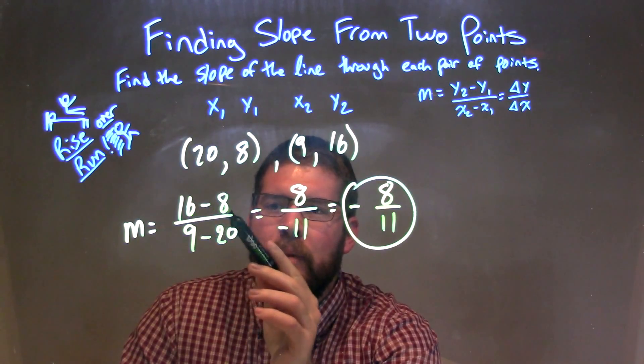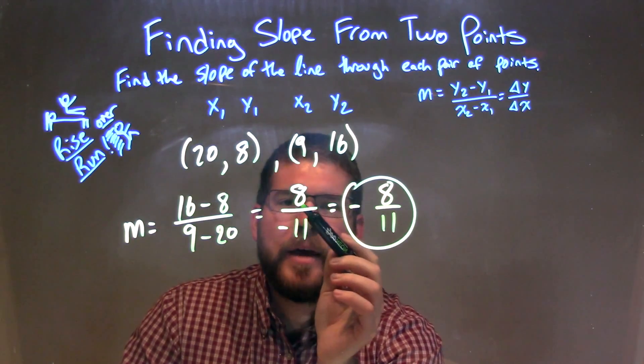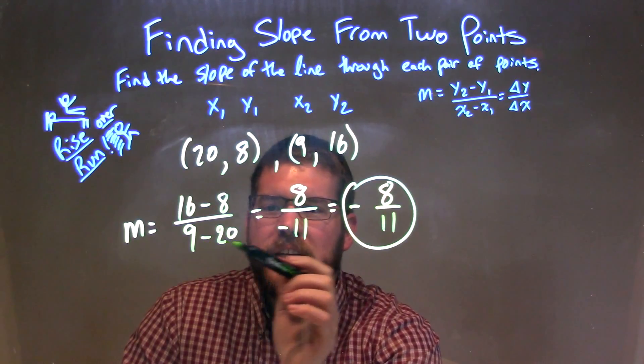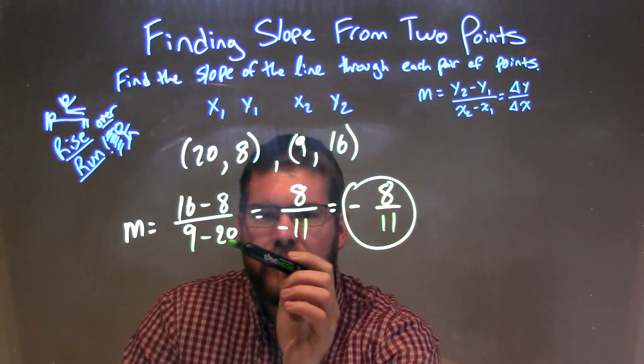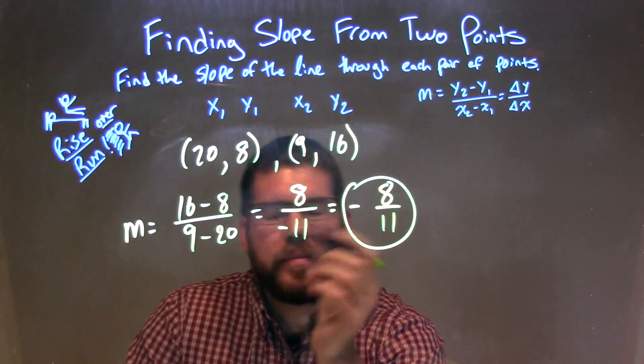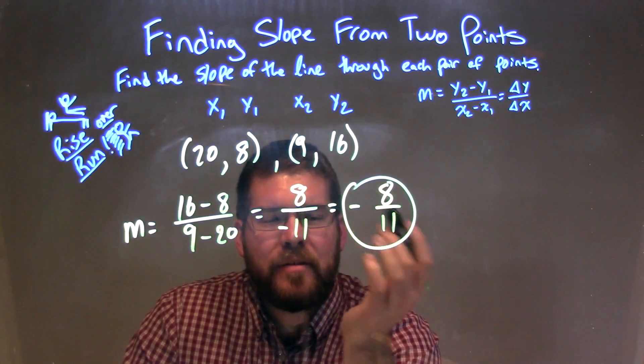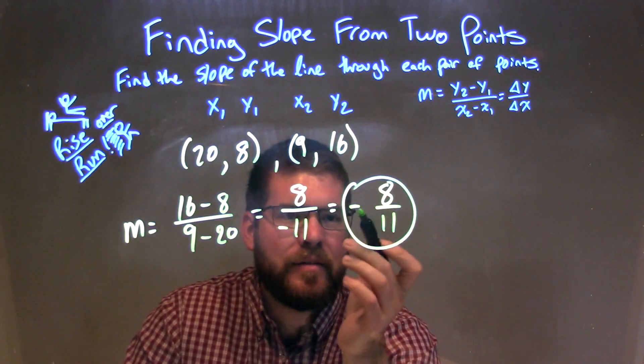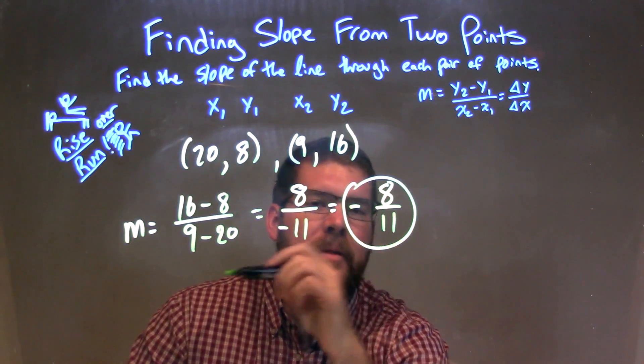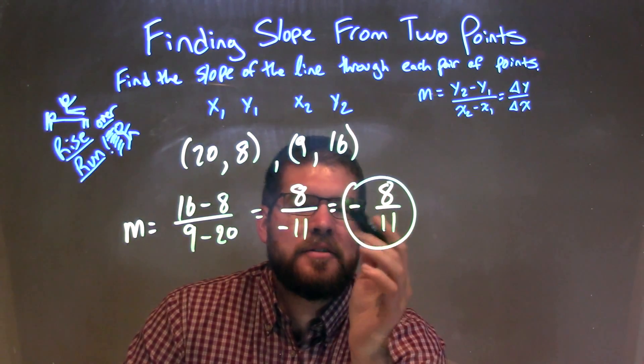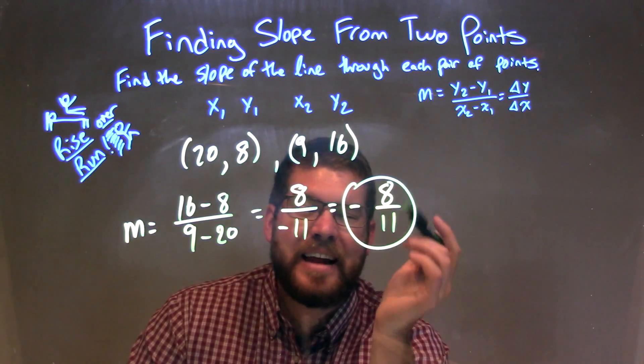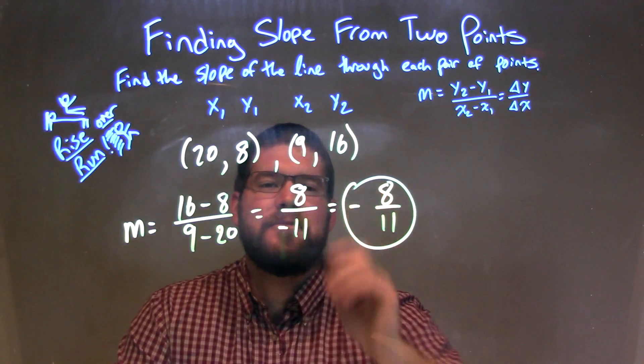Well, my y2 minus my y1, my change in y there, came out to be 8. And my change in x, my difference between my x's, is negative 11. So I have 8 over negative 11. Usually it's nicer to write the negative out front. I don't think your teacher's going to care, but I just did it right here. And so our final answer here is just negative 8 over 11, and that is the slope between these two points.